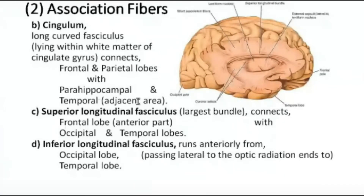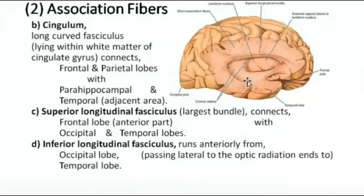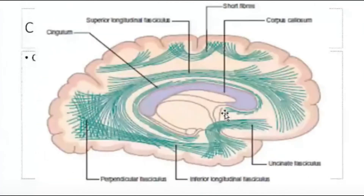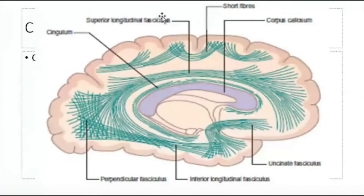The parahippocampus is part of the temporal lobe, and those are the connections of the cingulum — frontal and parietal lobes with the parahippocampal and temporal areas. The superior longitudinal fasciculus, the largest bundle, starts from the frontal lobe and goes to the occipital lobe, and can also reach the temporal lobe.